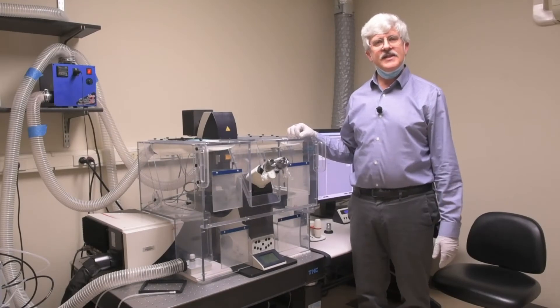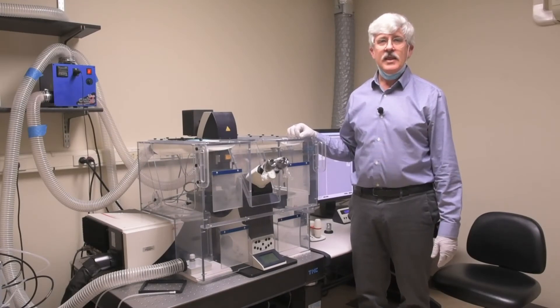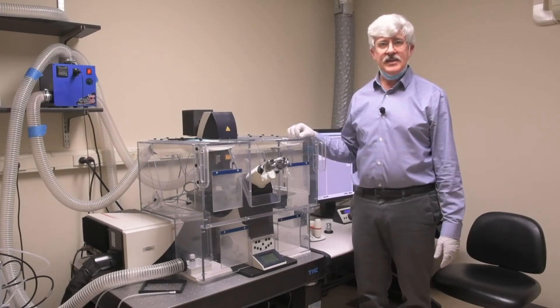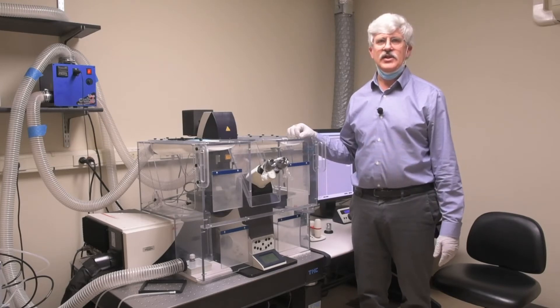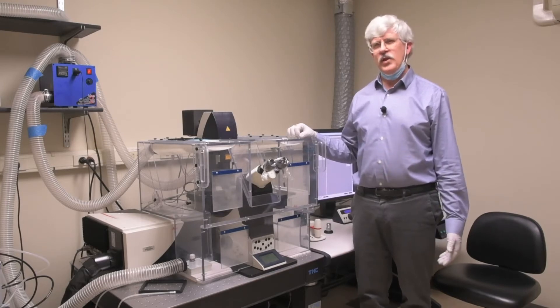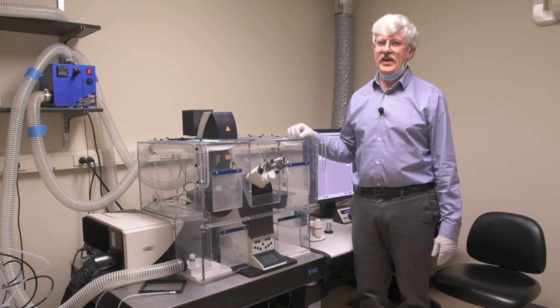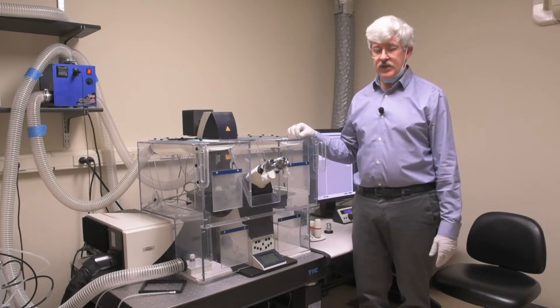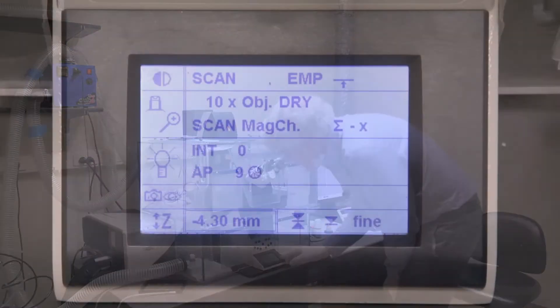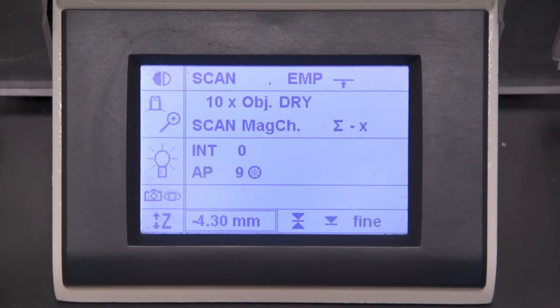First, you'll want to decide which objective to use. The most common one is the 63X, so we'll be using that for this demonstration. But just because that's the one you want to use doesn't mean that's the way it's set up right now, so the first thing to do is check and see what's in there. To see what lens is selected, take a look at the LCD panel on the front of the scope.